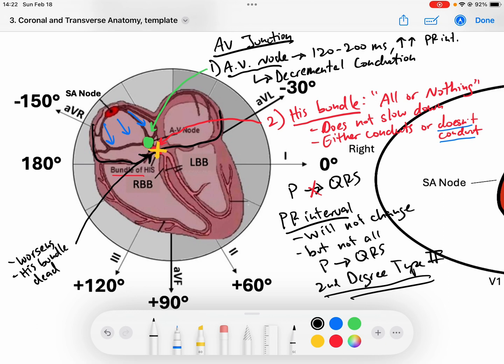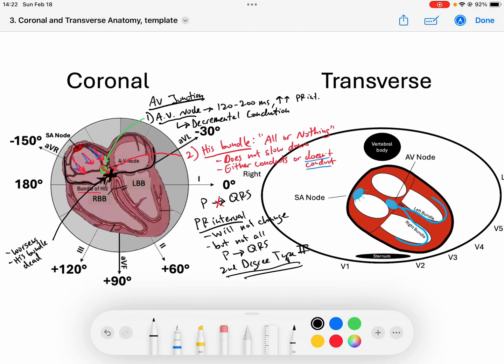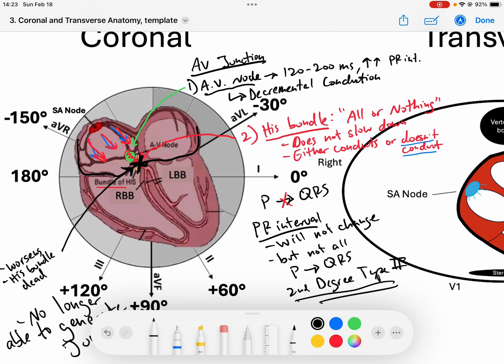What happens if now we have sinus nodes sending signals down to the AV node? The AV node is trying to conduct them down, but it gets blocked because this His bundle is now completely dead. This person used to have a second degree type 2 block, but now it's worsened. This person's His bundle doesn't work at all. They are no longer able to generate a junctional escape. Because if this person develops a block that's worsening at that point, if we develop junctional escapes, they're not going to make it down.